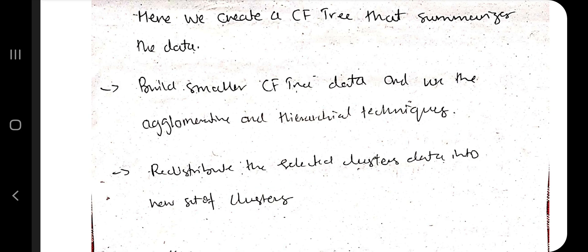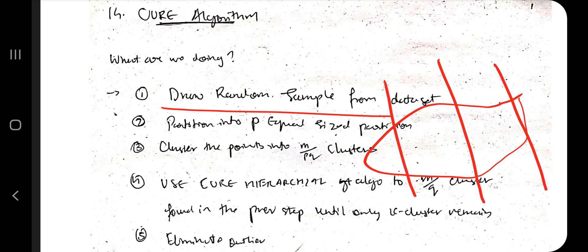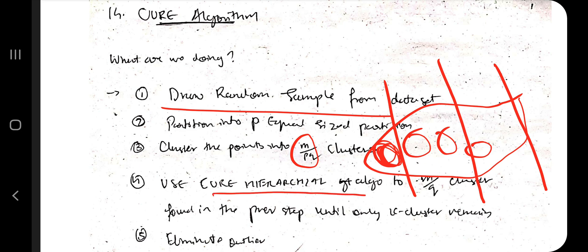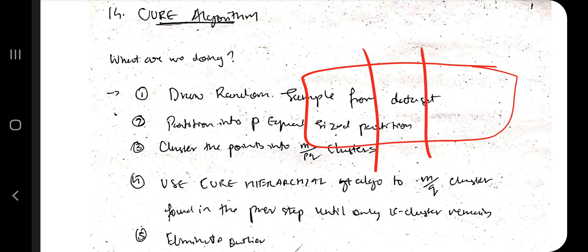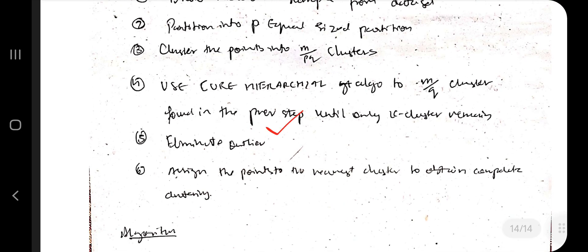The CURE algorithm starts by selecting a random sample from the dataset, then partitions it into p equal-size partitions. Clusters of size m/p*q are formed, and using the CURE hierarchical algorithm, m/q clusters are further formed from the previous step until only k clusters remain. Outliers are eliminated, and remaining points are assigned to the nearest cluster. If you want the full original algorithm, refer to the PDF with page numbers mentioned earlier. Thanks for watching — hit like and subscribe!